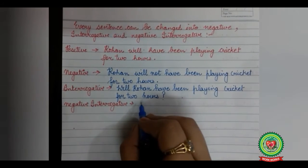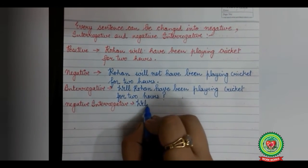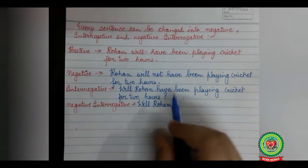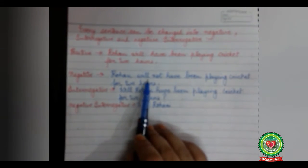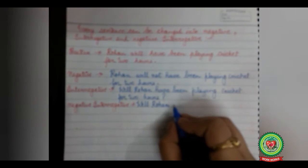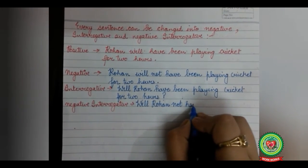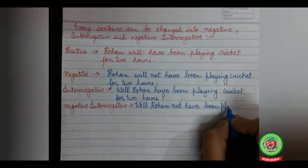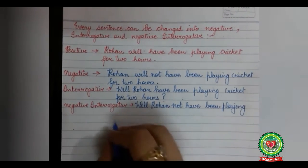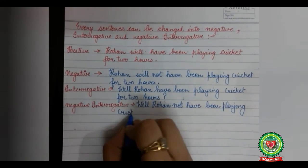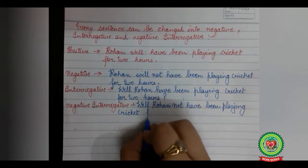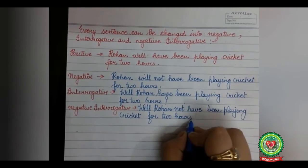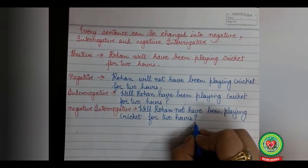To make it negative interrogative, 'not' will remain at the same place, so it will be: 'Will Rohan not have been playing cricket for two hours?' And as it is an interrogative sentence, it will end with a question mark.